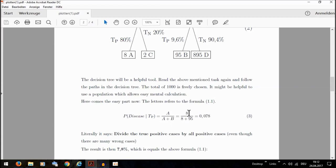And as you can see, it's 8 divided by 8 plus 95, which equals 7.8%.